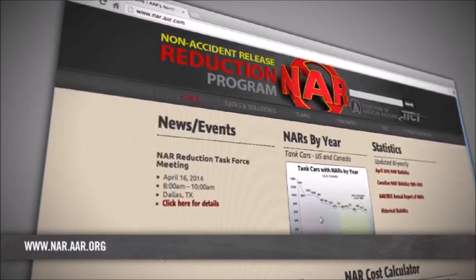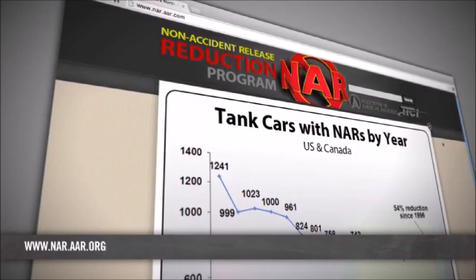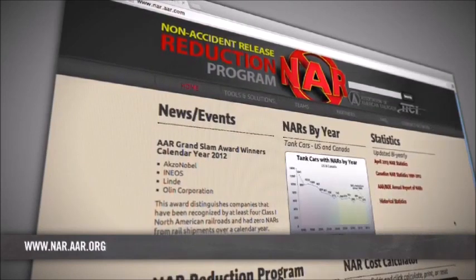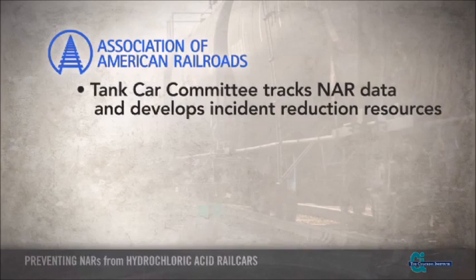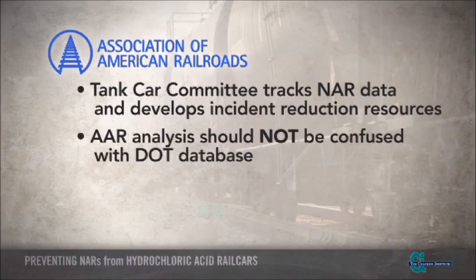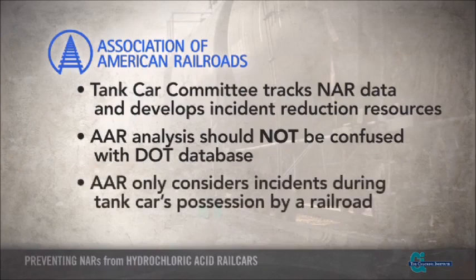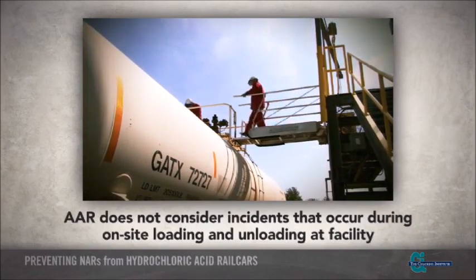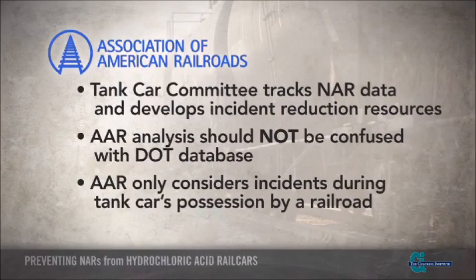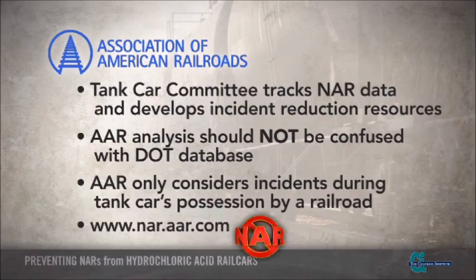The Association of American Railroads, or AAR, has certain responsibilities designated by DOT for overseeing the operations and performance of the rail industry, including tank car aspects. Under a task force of its Tank Car Committee, the AAR tracks NAR incident data regularly and develops guidance and resources to aid the industry in reducing these incidents. The data used in AAR's analysis is not to be confused with that reported in the DOT database, because AAR only considers incidents that occur while the tank car is in the railroad's possession. For example, the AAR does not consider incidents that occur during on-site loading and unloading at a shipper's or receiver's facility. More details regarding AAR's NAR tracking and guidance may be found through their website.